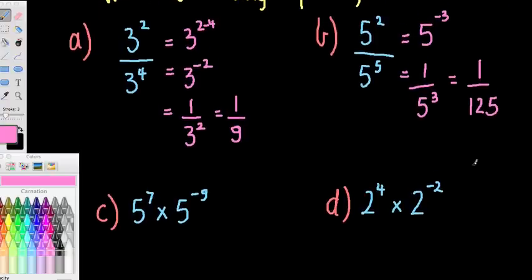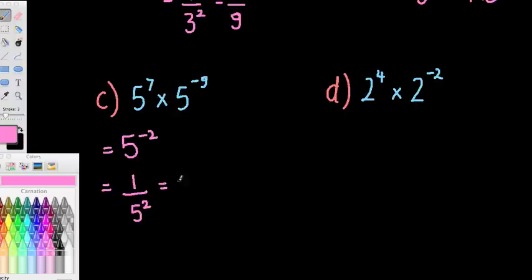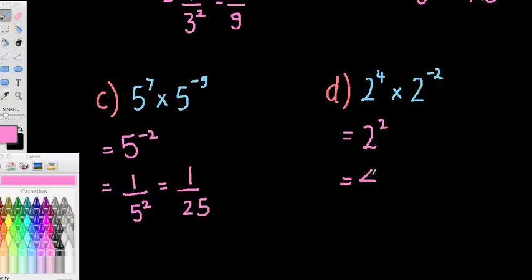5 to the power of 7 times 5 to the negative 9: multiplication with the same base, so we add the indices. 7 plus negative 9 is negative 2, so this equals 1 over 5 squared, which is 1 over 25. Next, 2 to the power of 4 times 2 to the negative 2: same base multiplied, so add the indices. 4 plus negative 2 is 4 minus 2, which equals 2, so 2 squared is 4.